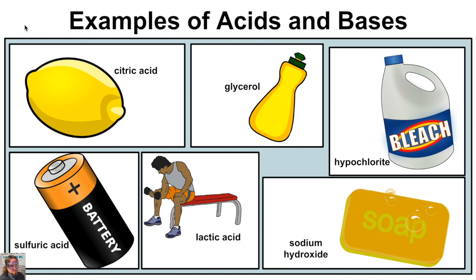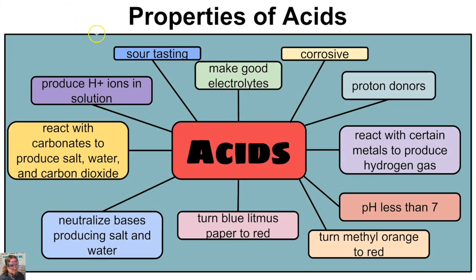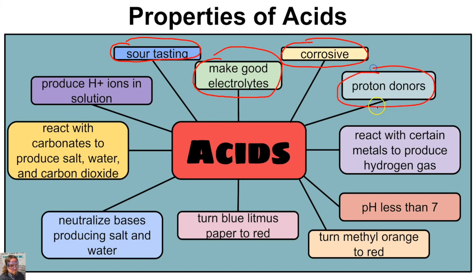Now let's take a look at some properties of acids. Acids have a sour taste — for example, biting into a lemon will give you a sour taste due to the citric acid in it. Acids conduct electricity, so they make good electrolytes. Acids are corrosive. Acids can be proton donors. Acids have a pH of less than seven on the pH scale. Acids also react with metals to produce hydrogen gas.